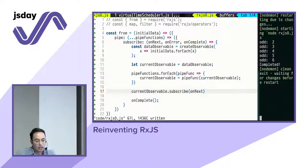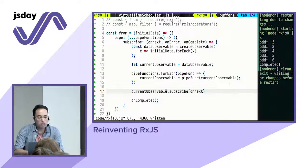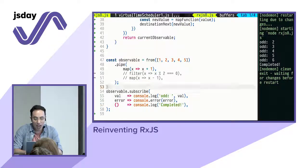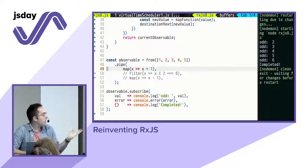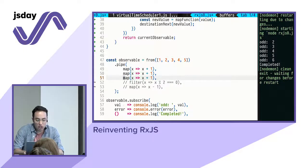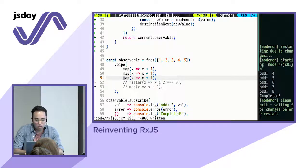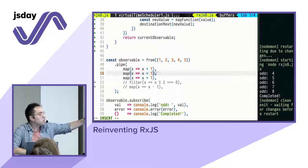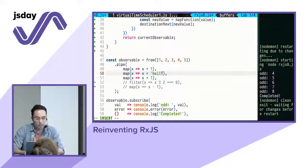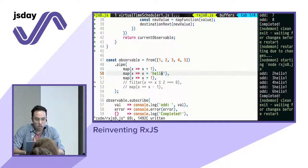I can add as many `map` operators as I want and the output is still going to be correct. The function could be anything — I could concatenate 'hello' and it will generate different output. It's totally agnostic of whatever the function is.